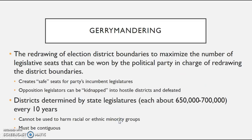If you're from Massachusetts you'd call it 'gerrymandering,' because it was named after the governor with the last name Gerry who utilized this practice. By definition, gerrymandering is the redrawing of a district boundary to maximize the number of legislative seats that can be won by the political party in charge of redrawing the district boundaries. Every 10 years each state has to redraw those boundaries.